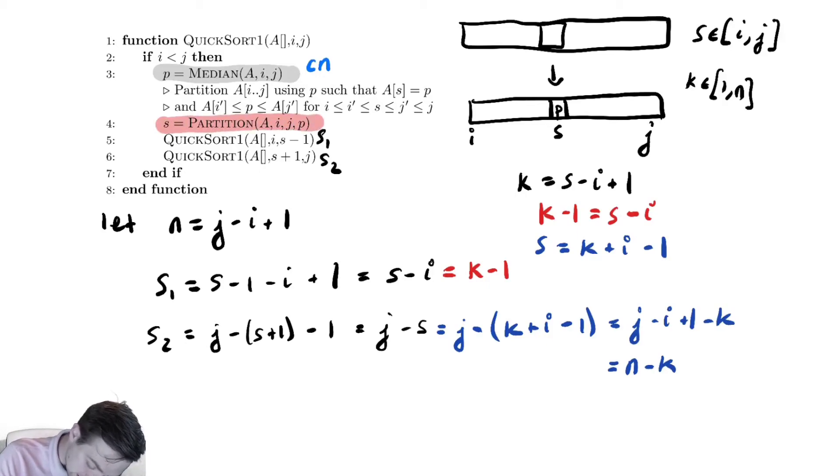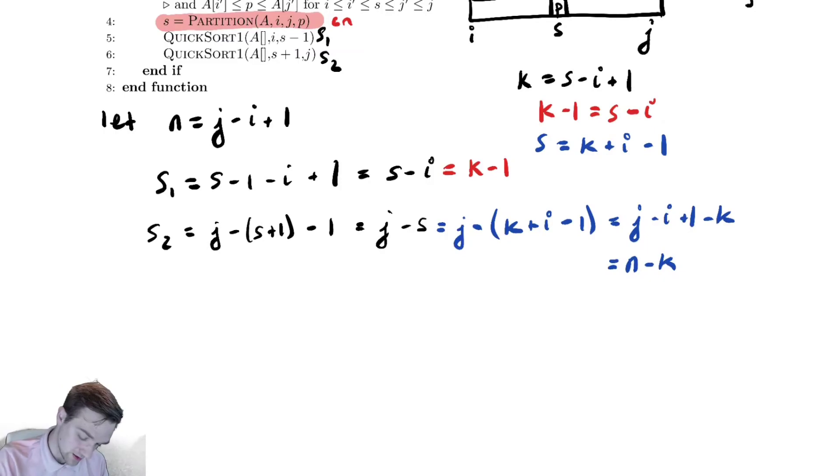So we have cn here. So the runtime for all of the non-recursive work would be cn. So my algorithm here looks like t of n is equal to cn plus a recursive call of size k minus 1 and a recursive call of size n minus k.